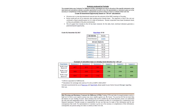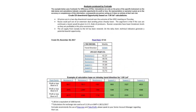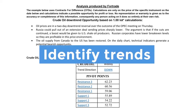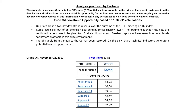Pivot points, support and resistance levels are all part of technical analysis. The aim of technical analysis is to be able to identify patterns or trends so that we can estimate the potential future direction of the price of the instrument we are looking at.